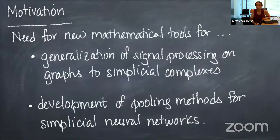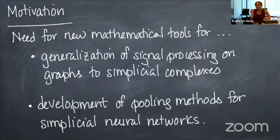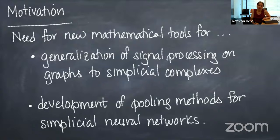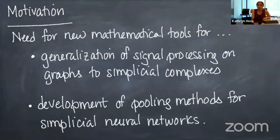There's a real need for new mathematical tools for two things. First, to generalize signal processing from graphs to simplicial complexes. Simplicial complexes are a combinatorial formalization of the notion of meshes beyond surfaces or three-dimensional objects, and you can be interested in processing signals on these objects. Also, graph neural networks are a very popular new method in deep learning, and these have been generalized to the notion of simplicial neural networks. If you want to do pooling in these neural networks, you need very special techniques, and what I'm going to be talking about today can be useful for developing pooling methods for simplicial neural networks.